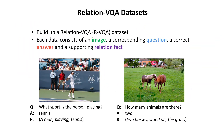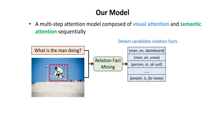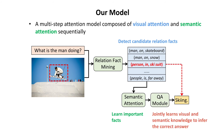In this paper, we build up the relation VQA dataset in which each data consists of an image, a corresponding question, a correct answer, and supporting relation facts. We further propose a multi-step attention model for VQA. The model can detect candidate relation facts based on both image and question content and learn important facts with semantic attention. Finally, the model jointly learns visual and semantic knowledge to infer the correct answer.